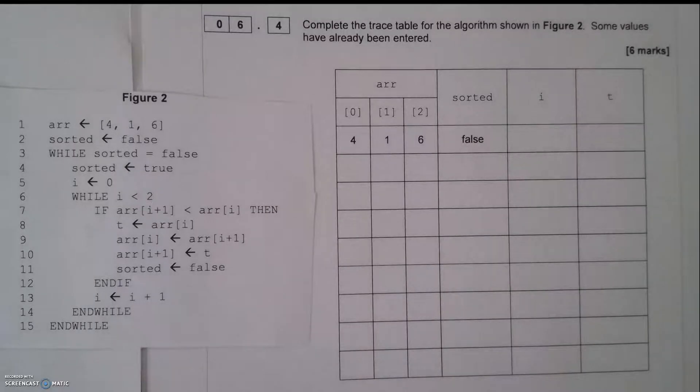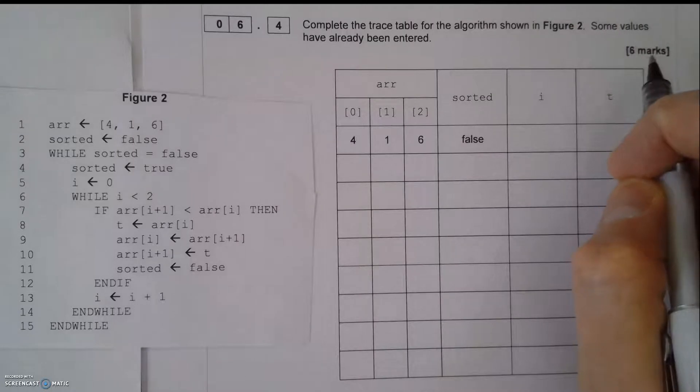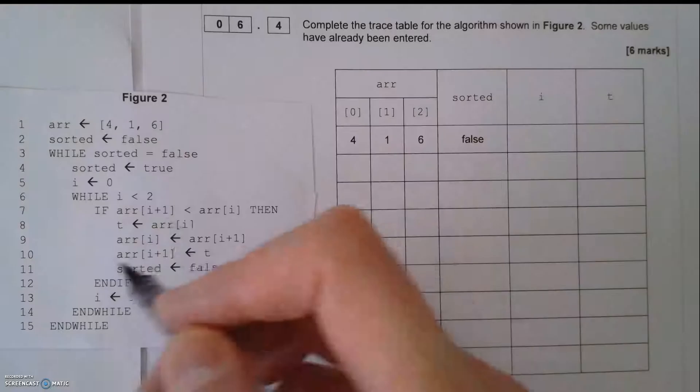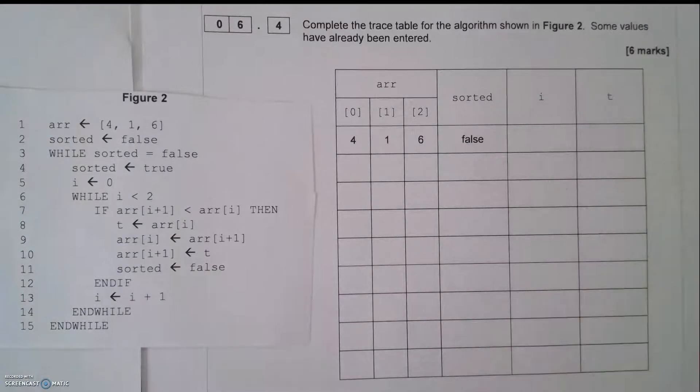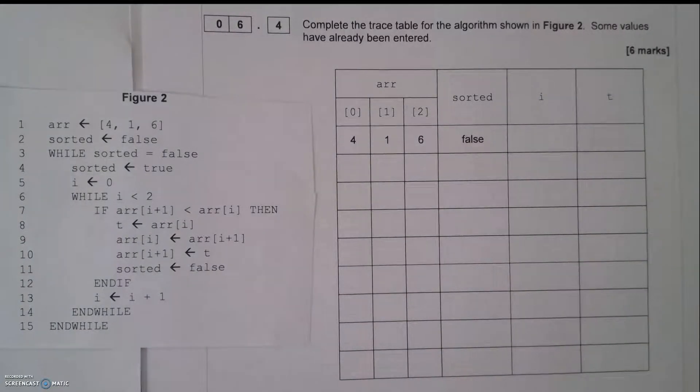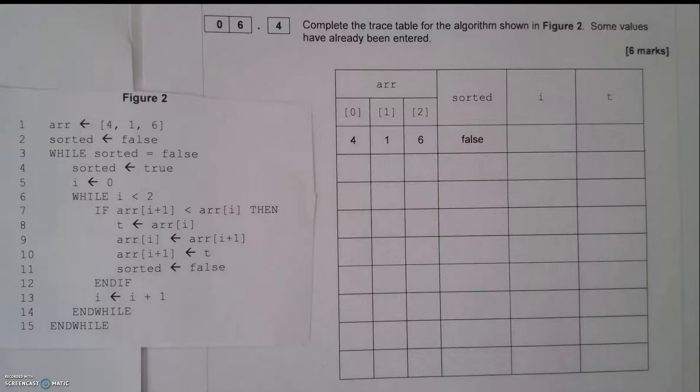In this video, we're going to be looking at trace tables, which is a big part of most GCSE computer science specifications. The AQA, for example, has probably at least a few questions with fairly big marks, where you are given an algorithm and you are asked to trace it through. So what you're doing with a trace table is something called a dry run, which is a computer science term.